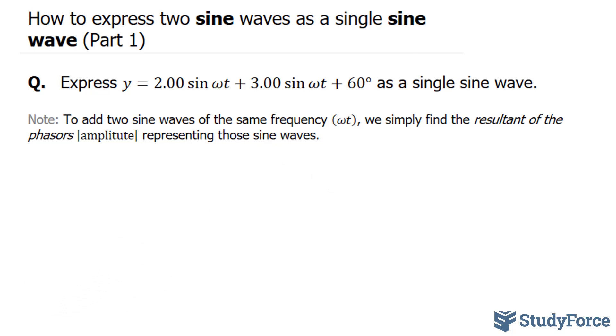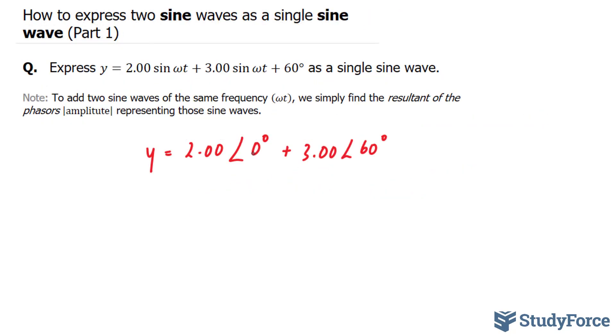What I first want to do is rewrite this function in a notation we understand. We have y equals 2.00 at an angle of 0 (notice this doesn't have a phase angle) plus 3.00 at an angle of 60. I'll treat this as the magnitude of a vector and this as its angle, so we'll be adding these two vectors together.